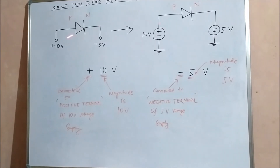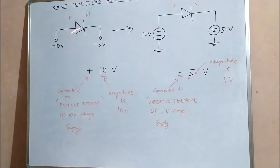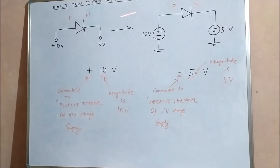Whichever circuit representation form you encounter, you should have no difficulty converting between the two. Use whichever form you are more comfortable with when applying KVL or other circuit laws to determine whether a diode is forward or reverse biased. I hope you liked this video — please subscribe to Engineering Tutorial for more videos on electrical, electronics, instrumentation, and communication engineering. Thank you very much.